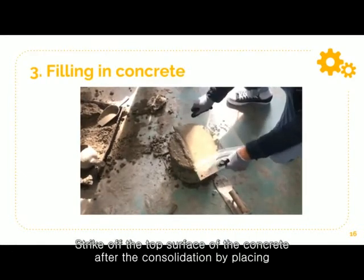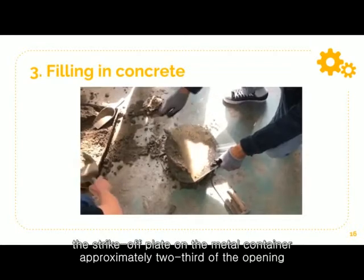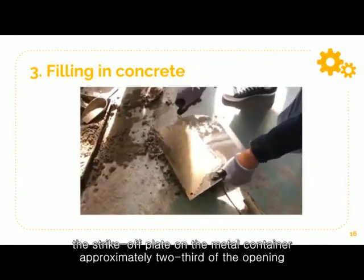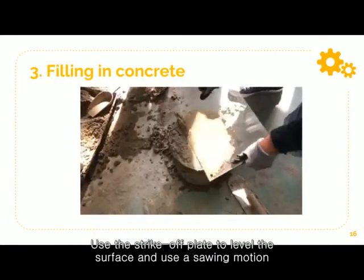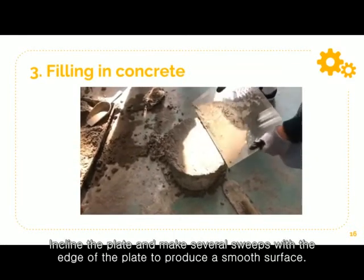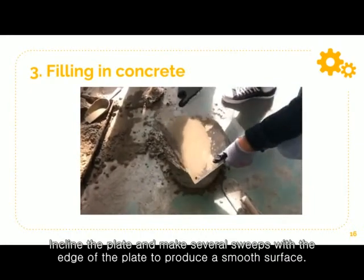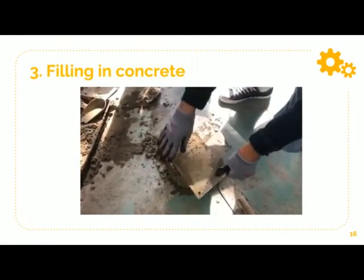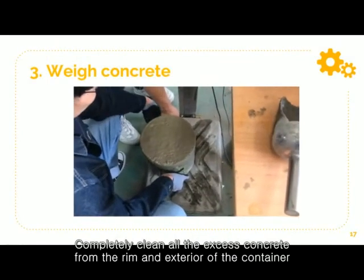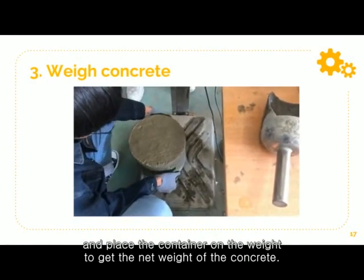Strike off the top surface of the concrete after consolidation by placing the strike-off plate onto the metal container at approximately two-thirds of its width. Use the strike-off plate to level the surface using a sawing motion. Incline the plate and make several sweeps with the edge to produce a smooth surface. Then completely clean all excess concrete from the rim and exterior of the container and place the container on the scale to get the net weight of the concrete.